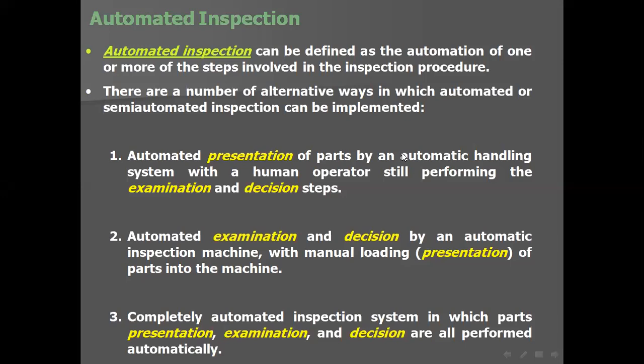The first alternative has automated material handling but the human operator is still responsible for examination and inspection decisions. The second alternative is automated examination and decision by an automatic inspection machine with manual loading — exactly the opposite of the first: workers move parts manually but the machine handles examination and decisions. The third is completely automated: presentation, examination, and decision are all performed automatically.